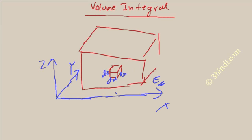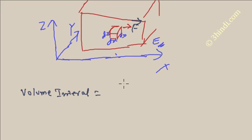Suppose a vector function F is acting on this small elementary volume. So the volume integral can be written as integration in this region F dv. F is a vector quantity and dv is a scalar quantity.